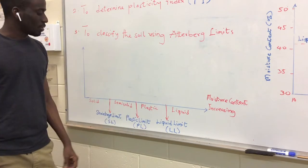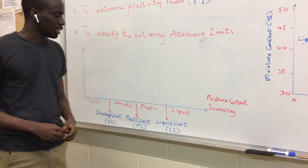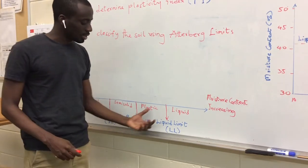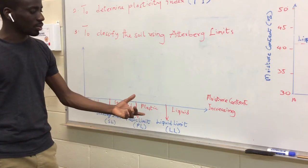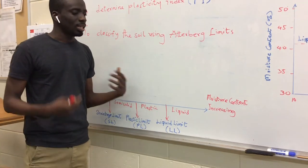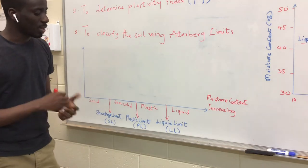From the plastic stage to the liquid stage, the transition from that is called the liquid limit. And that happens when you add more water to it. You can see clearly that you are increasing the moisture content of the soil and that is why it is becoming more liquid as you go on.